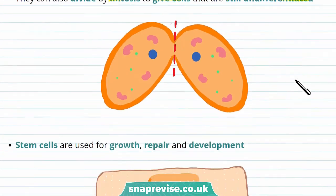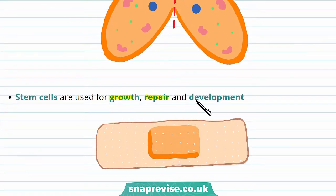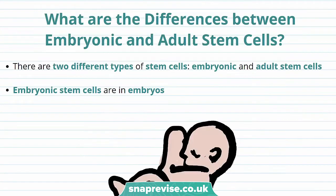These stem cells are used for growth, repair, and development. For example, stem cells can produce new red blood cells after you've had a cut.